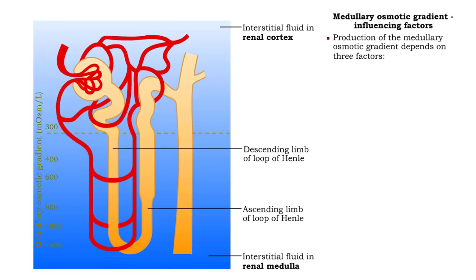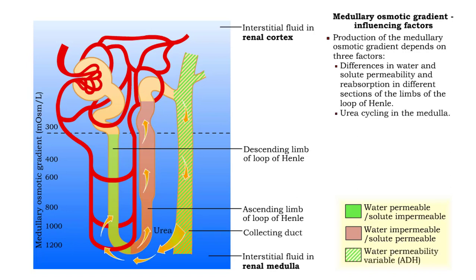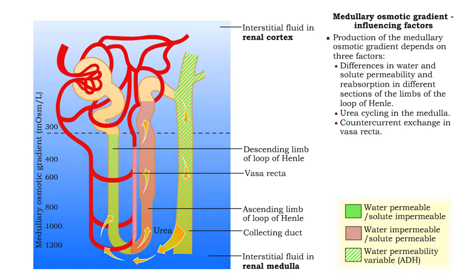Production of the medullary osmotic gradient depends on three factors. The first is differences in water and solute permeability and reabsorption in different sections of the limbs of the loop of Henle. The second is urea cycling in the medulla, and the third is the countercurrent exchange of fluid in the vasa recta.